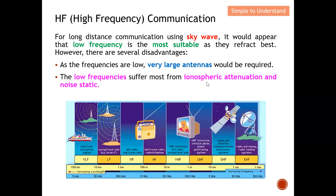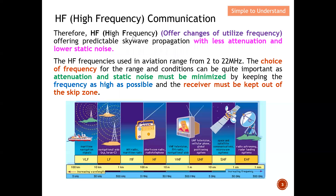Low frequency also suffers most from atmospheric attenuation and noise static, which means the lower the frequency, the more susceptible they are to atmospheric attenuation and noise static. Therefore, high frequency offers the ability to vary frequency — providing predictable sky wave propagation with less attenuation and lower static noise by varying the frequency to the optimum case.